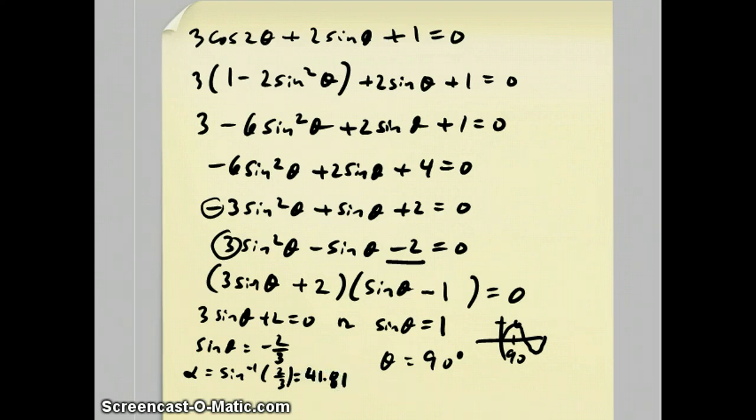Sine is negative in quadrants 3 and 4. So I did the two conversions: 180 plus 41.81 and 360 minus 41.81.